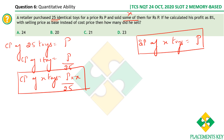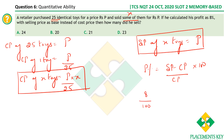The profit percentage of 8% is calculated with selling price as the base (not cost price). So the formula is: profit% = (SP − CP)/SP × 100. Therefore 8 = (p − px/25)/p × 100, which gives 8/100 = (1 − x/25).